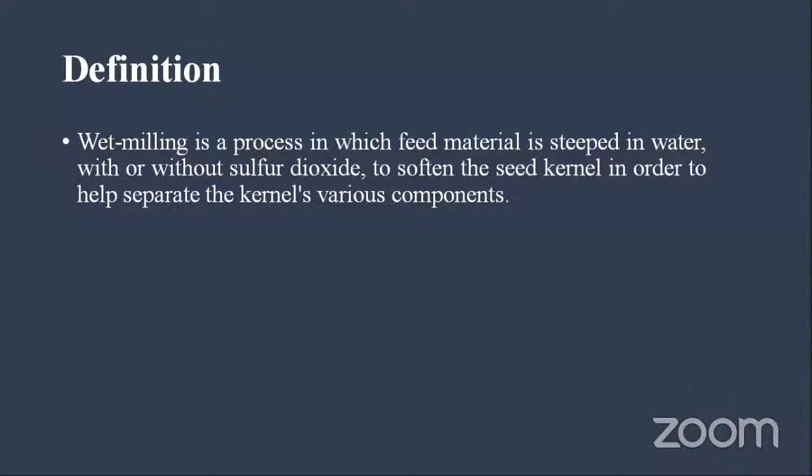Now we move to wet milling. In wet milling, the first step is steeping, where the moisture content of the corn is increased to around 42 percent. A helpful way to remember: wet milling uses 42 percent moisture, and dry milling uses 21 percent — which is exactly half. So if you remember one, the other is double or half accordingly.